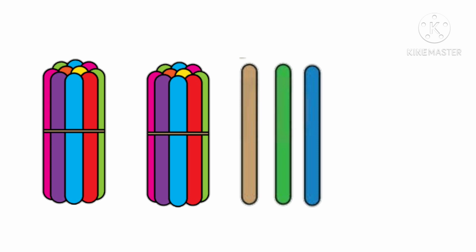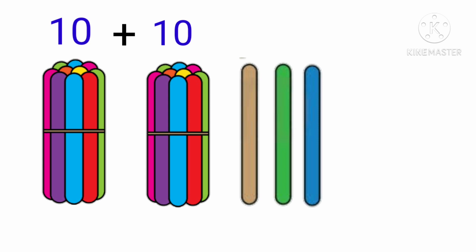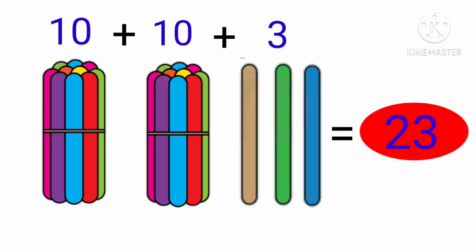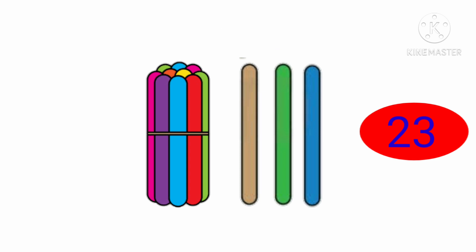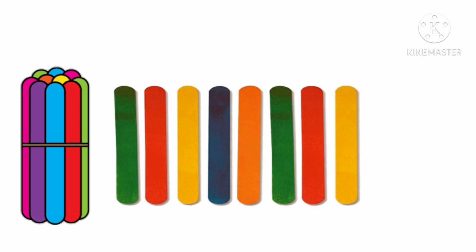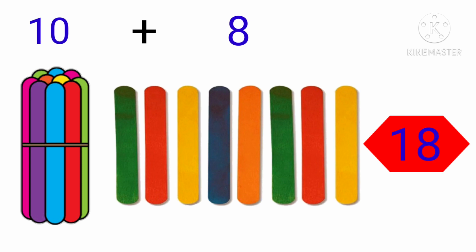Now there are 2 bundles of sticks and also 3 loose sticks. So 2 bundles of sticks means 10 sticks plus 10 sticks is 20, and 3 loose sticks — so 20 plus 3 is 23. Now here 1 bundle of sticks and 8 loose sticks, so 10 plus 8 loose sticks is equal to 18 sticks.